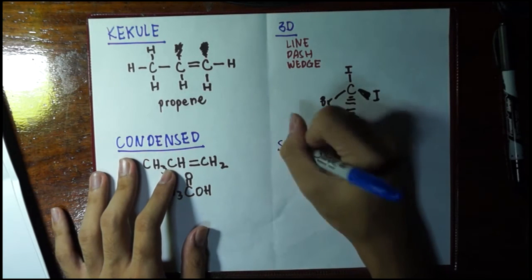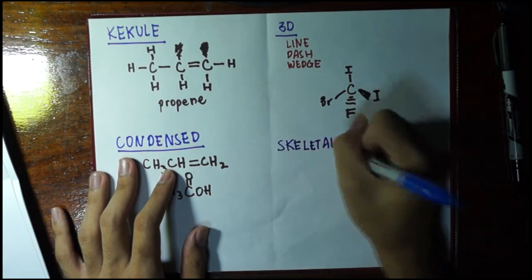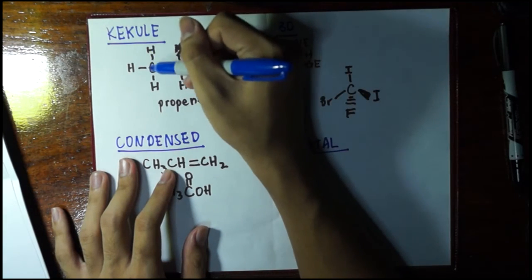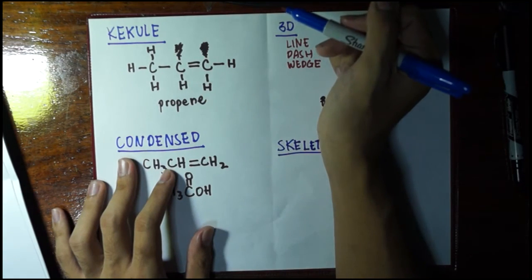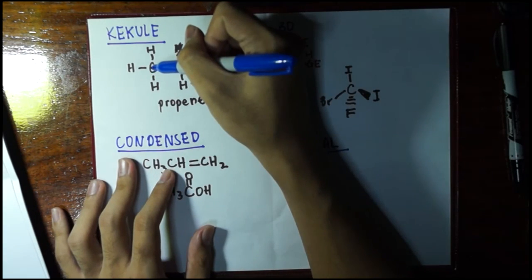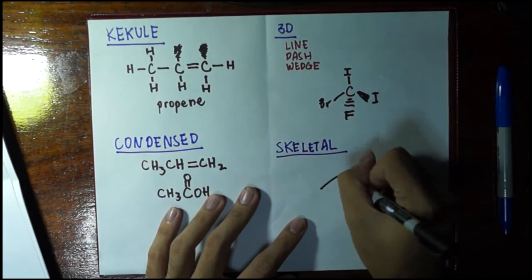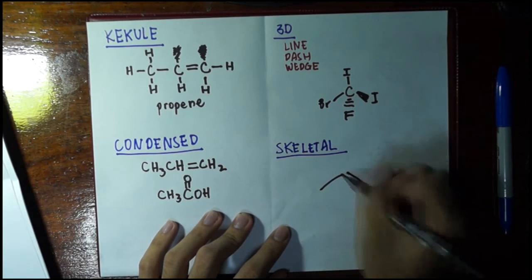Finally, we have the skeletal formula. This is my personal favorite because I'm a lazy person. In the skeletal formula, any C to H bond will be implied, meaning it is not going to be drawn anymore. If I'm going to draw propene, it's going to look like this. Why? Each point here is a carbon.